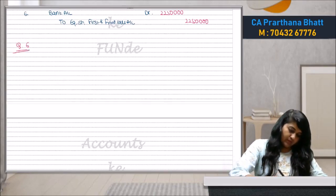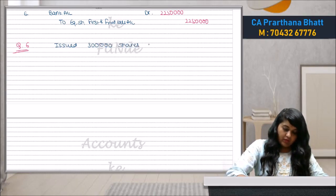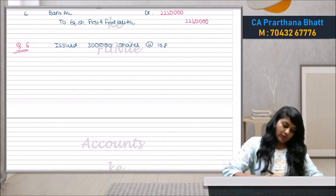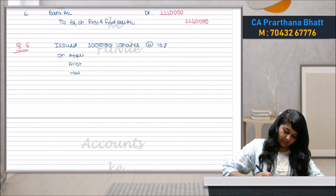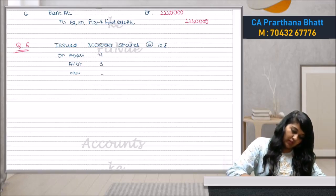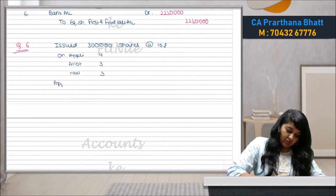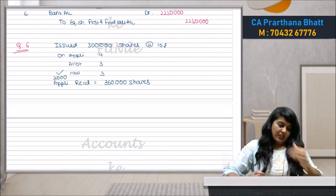Question number 6 working: Issued 3 lakh shares at ₹10 each. On application ₹4 is called, on allotment ₹3, and on call ₹3 are called upon — that is 4, 3, and 3. Applications received are 3,60,000 shares. There is one shareholder, Asha, who has not paid call money on 2,000 shares.